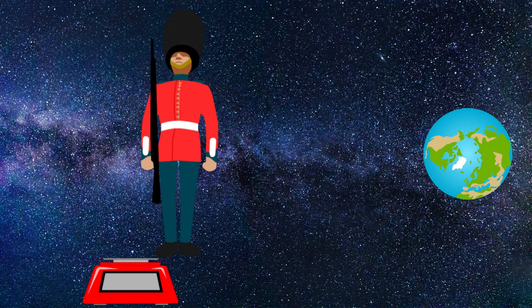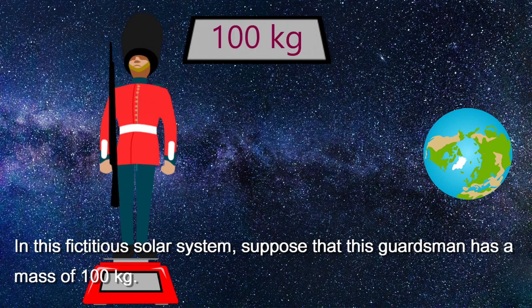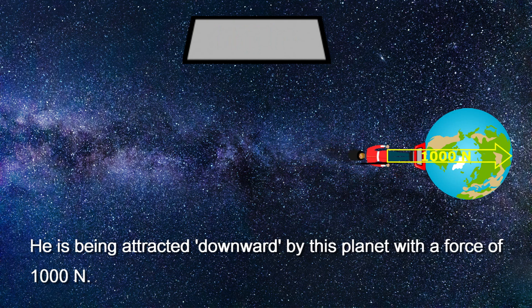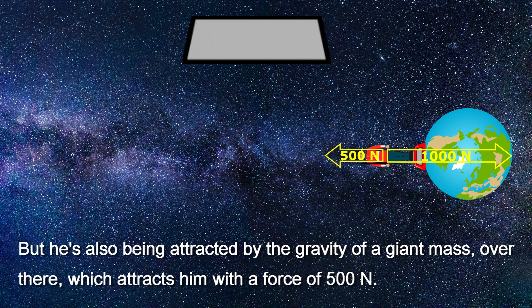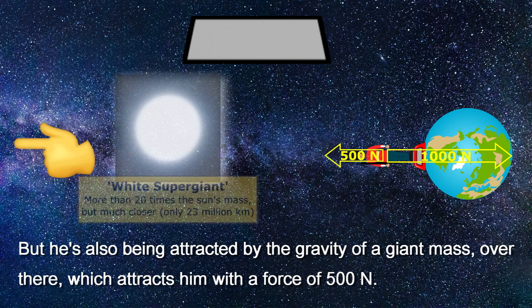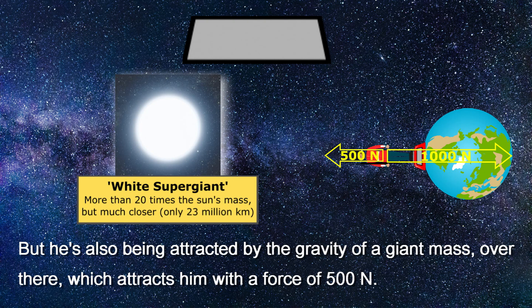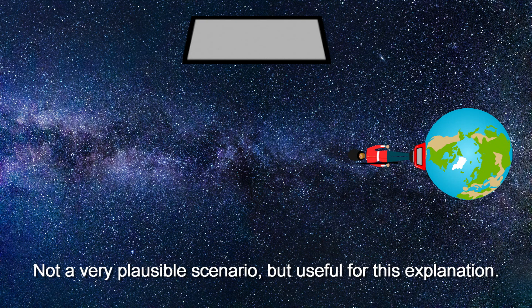In this fictitious solar system, suppose that this guardsman has a mass of 100 kilograms. He's being attracted downward by this planet with a force of 1000 newtons. But he's also being attracted by the gravity of some giant mass over there, which attracts him with a force of 500 newtons. Not a very plausible scenario, but useful for this explanation.